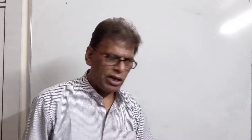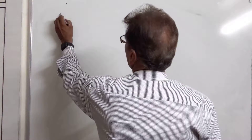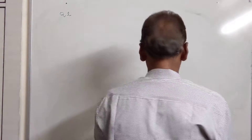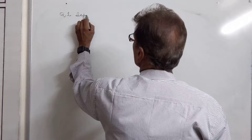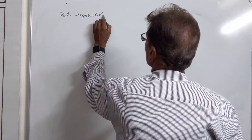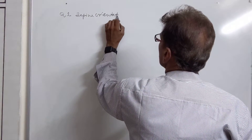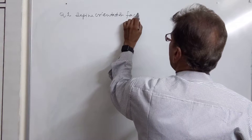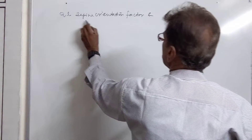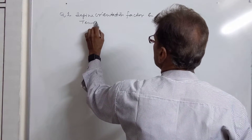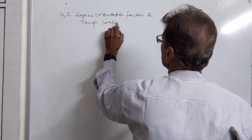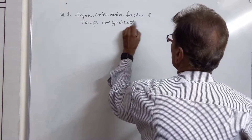Continuing with chemical kinetics, we start with some other questions. Question number one of lecture number three: we find the orientation factor and temperature coefficient of the reaction.